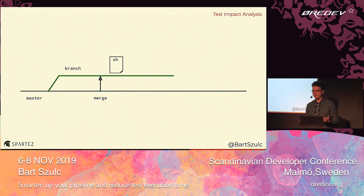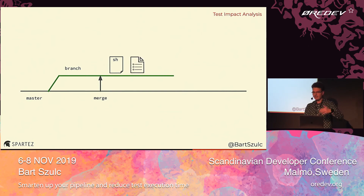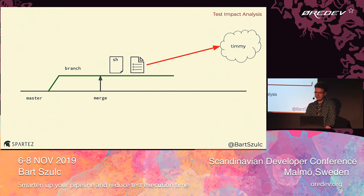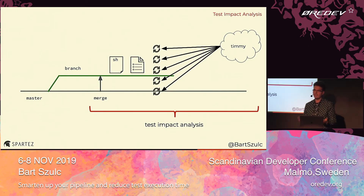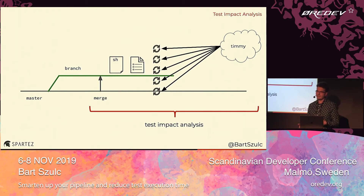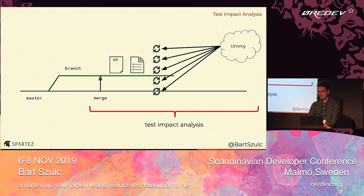We check if any Java files changed, if new tests were added or tests were changed. We combine the list of changed things, send it to Timmy — the test impact map service — and expect Timmy to return the minimal subset of tests that need to be run for that particular commit. If tests were added or changed as part of the commit, we also run those tests. So we look for production code that changed, tests for that production code, and tests that changed themselves. This is how test impact analysis works in our case.